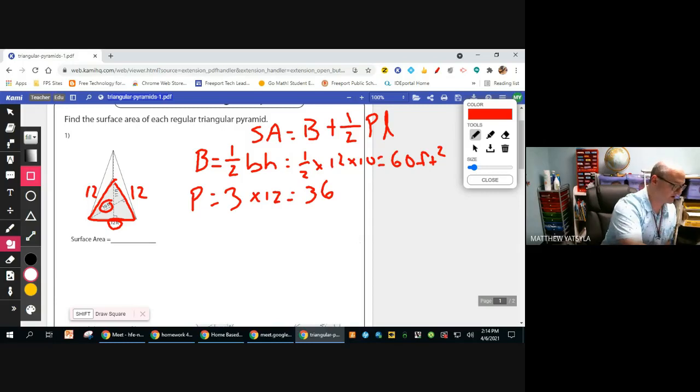And then we have our slant height, which is here. So our slant is 11 feet. So we're going to place all of these into the formula. So we're going to get our base, which is 60,